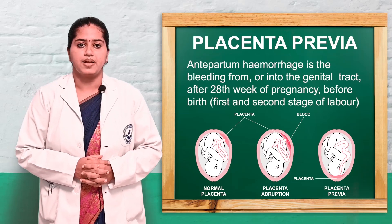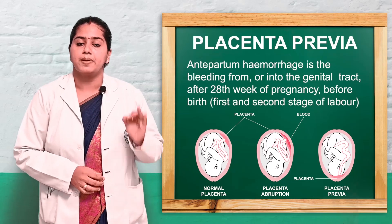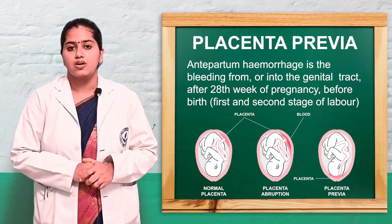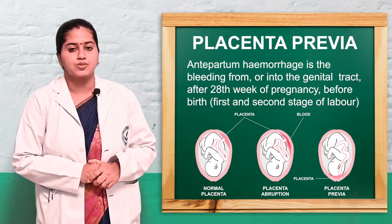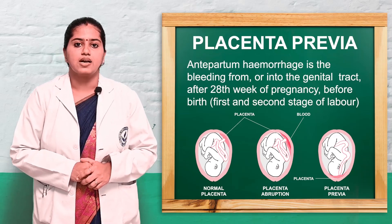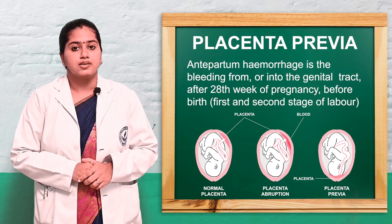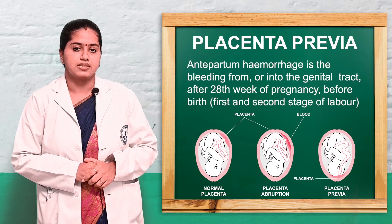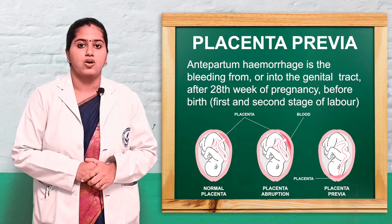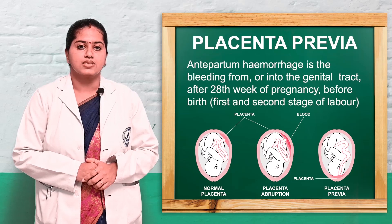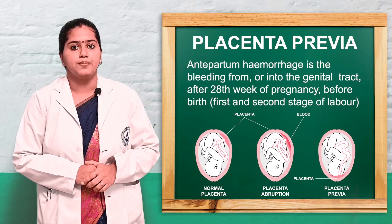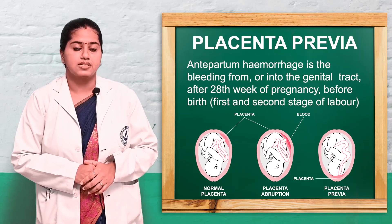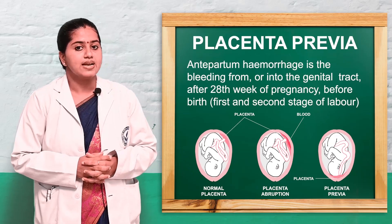There are three types of antepartum hemorrhage. The first is placental causes, accounting for 70% — mainly two conditions: placenta previa at 35% and abruptio placenta at 35%. The second is extra-placental causes at 25%, including cervical polyp, cervical carcinoma, and varicosities. The last 5% are unexplained causes or unknown etiology.